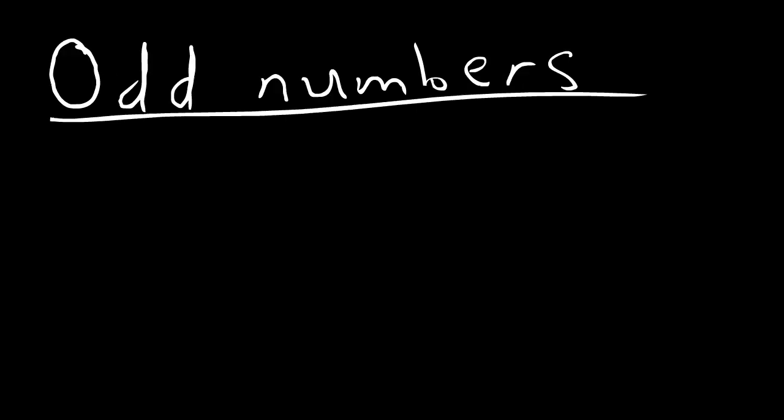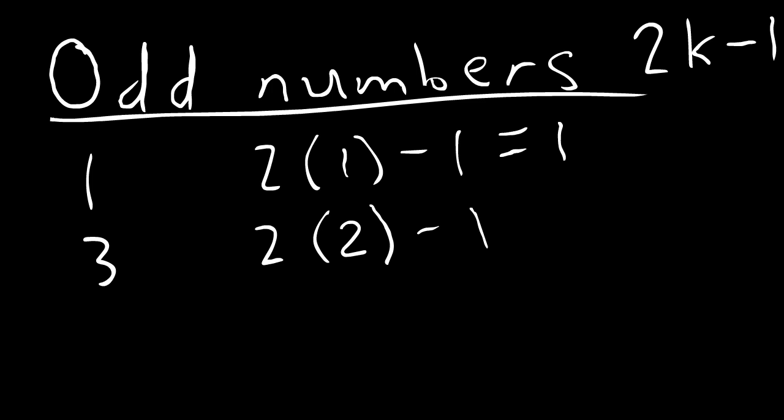We can then apply the same process for odd numbers. 2k minus one gives the kth odd number. One is the first odd number, which if we plug in one for k, we get two minus one, which is one. Three is the second odd number, which if we plug in two for k, we get four minus one, which is three, and so on.